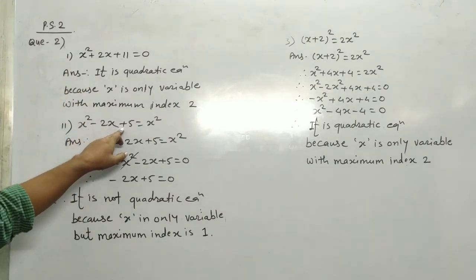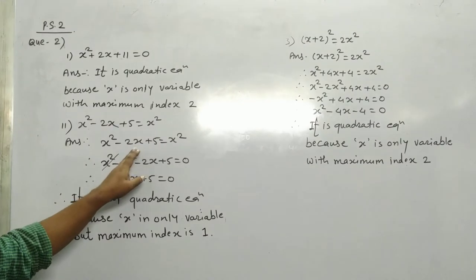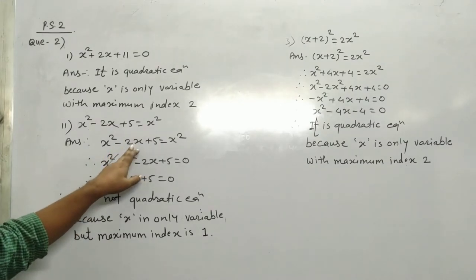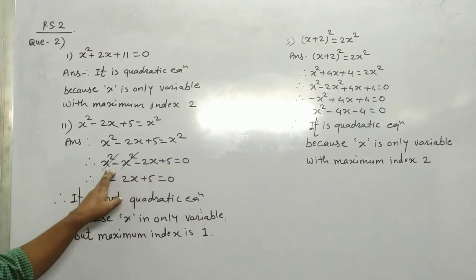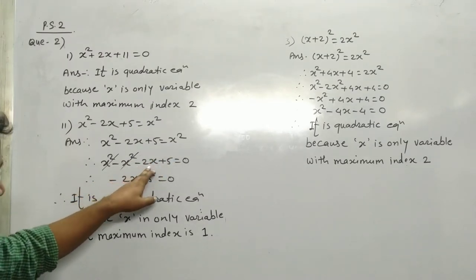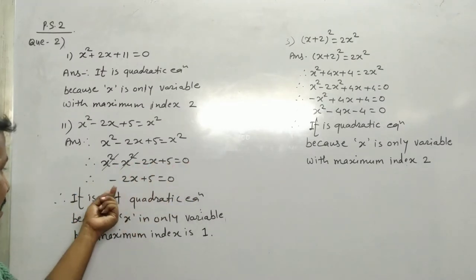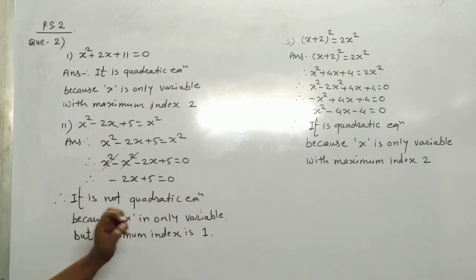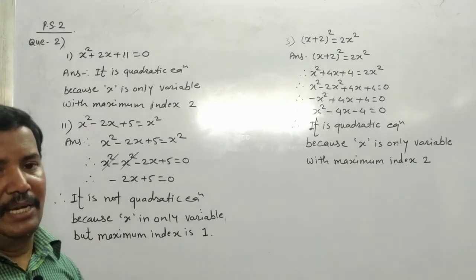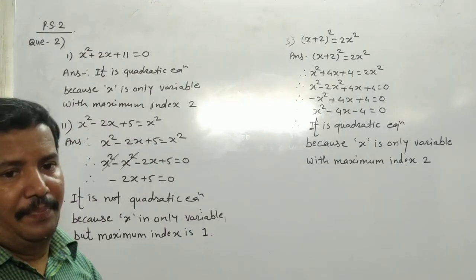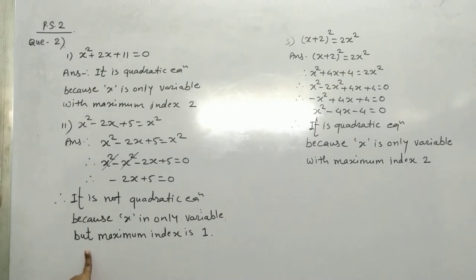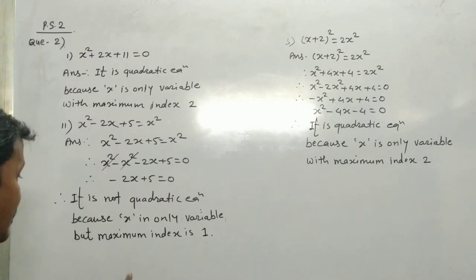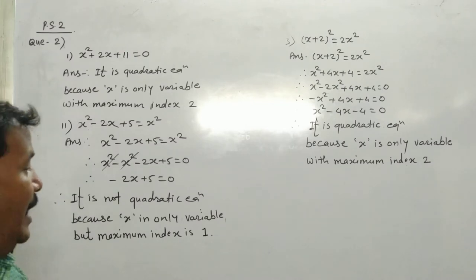Second equation: x² - 2x + 5 = x². Simplifying, this becomes -2x + 5 = 0. It is not a quadratic equation because x is the only variable but the maximum index is 1.